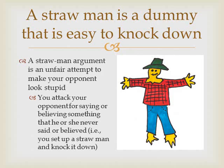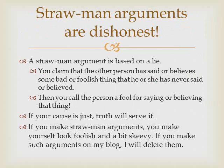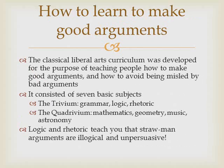A straw man argument is an example of a fallacy of relevance and a red herring fallacy. A straw man argument is an attempt to make your opponent look stupid — you attack your opponent for saying or believing something that he or she never said and never believed. In other words, you set up a straw man and then knock it down. Straw man arguments are dishonest and based on a lie. You claim that the other person said or believed some bad or foolish thing that he never said or believed, then you call the person a fool for it. I think you should never make straw man arguments — they are dishonest and immoral. If your cause is just, truth will serve it. If you make straw man arguments, you make yourself look foolish and a bit skeevy. If you make straw man arguments on my blog, I will delete them.